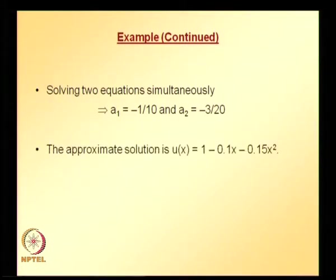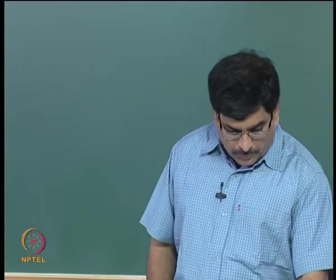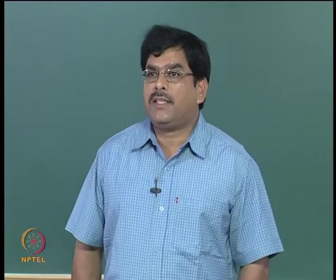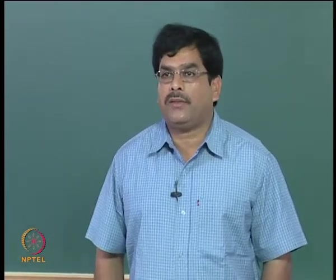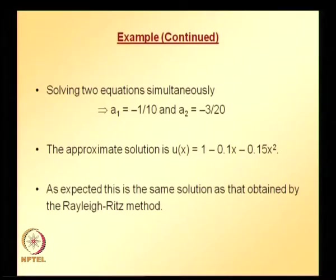We substitute these coefficients back into the admissible trial solution u = 1 + a₁x + a₂x². Substituting a₁ = −1/10 and a₂ = −3/20 gives the approximate solution. Comparing this solution obtained using the modified Galerkin method, it is exactly the same as what was obtained using the variational (Rayleigh-Ritz) method — which is expected because both methods starting with the same order of trial solution yield exactly the same result.